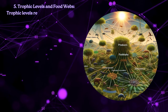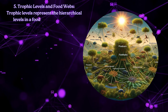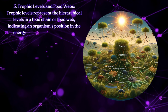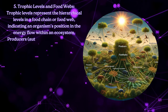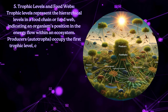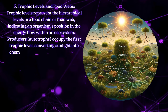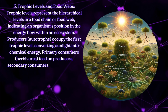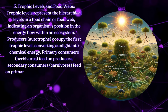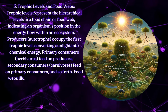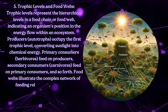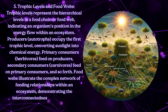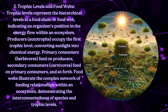Trophic levels represent the hierarchical levels in a food chain or food web, indicating an organism's position in the energy flow within an ecosystem. Producers, or autotrophs, occupy the first trophic level, converting sunlight into chemical energy. Primary consumers, herbivores, feed on producers; secondary consumers, carnivores, feed on primary consumers, and so forth. Food webs illustrate the complex network of feeding relationships within an ecosystem, demonstrating the interconnectedness of species and trophic levels.